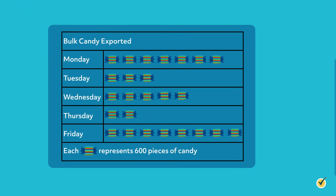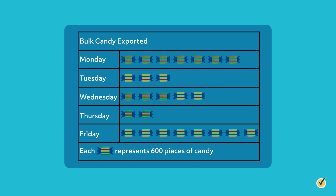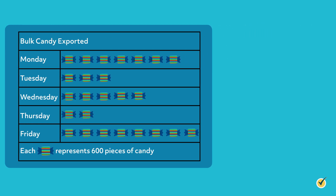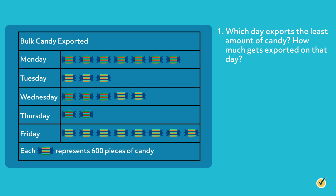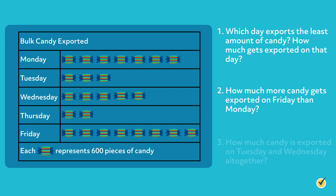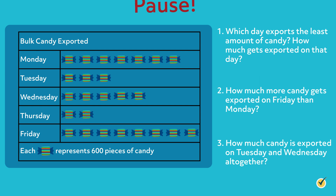Now it's your turn. Sparkle's Candy Factory exports bulk candy. The pictograph shows the amount of candy exported each day. Use the pictograph to answer the following questions: 1. Which day exports the least amount of candy? How much candy gets exported on that day? 2. How much more candy gets exported on Friday than on Monday? 3. How much candy is exported on Tuesday and Wednesday altogether? Pause the video, analyze the pictograph, and see if you can answer these questions yourself. When you're ready, resume the video and we'll go over the answers together.